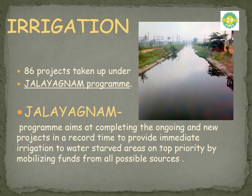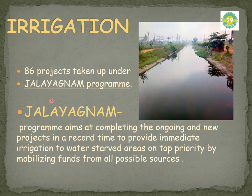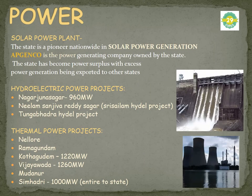Regarding irrigation, Andhra Pradesh has a program called Jalayagnam, under which 86 projects are being undertaken. This program aims at completing ongoing and new projects in record time to provide immediate irrigation to water-starved areas by mobilizing funds from all possible sources. Jalayagnam is an important term to remember, as it was prominently featured in India Yearbook.